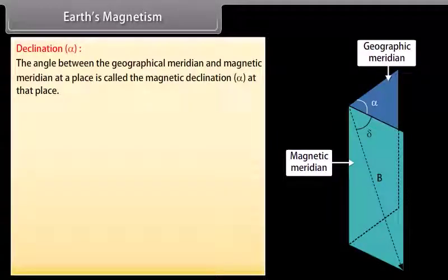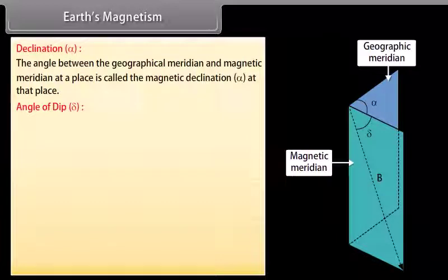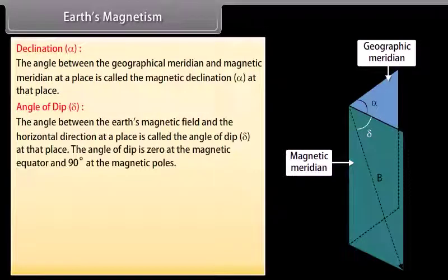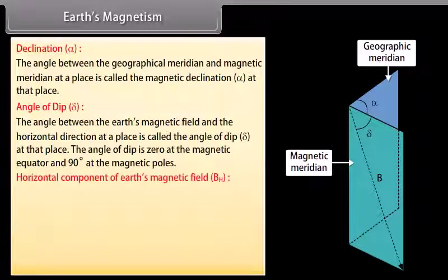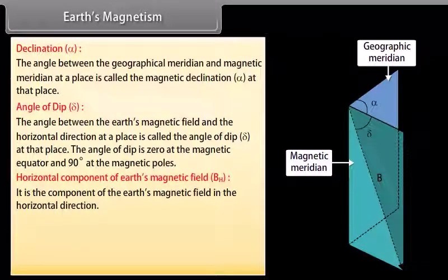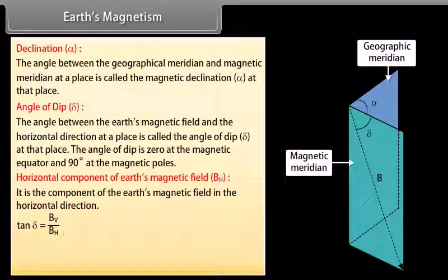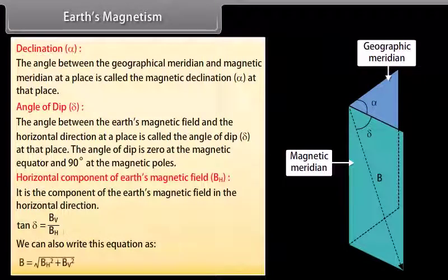Declination (alpha): The angle between the geographical meridian and the magnetic meridian at a place is called the magnetic declination. Angle of Dip (delta): The angle between the Earth's magnetic field and the horizontal direction at a place is called the angle of dip. It is 0 at the magnetic equator and 90 degrees at the magnetic poles. The horizontal component of Earth's magnetic field BH satisfies: tan delta = BV / BH, and B = sqrt(BH² + BV²).